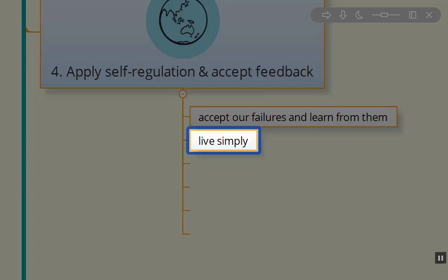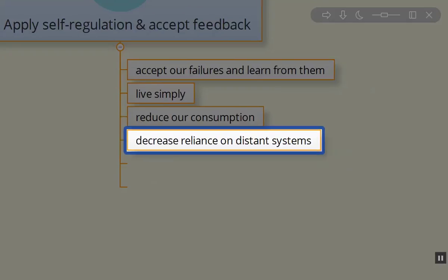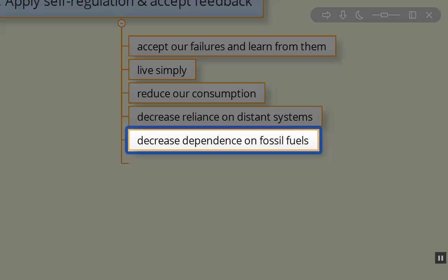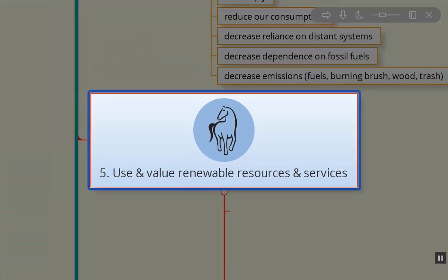Living simply is stopping our reliance on other systems, reducing our consumption, decreasing our reliance on distant systems. We know that food often comes to our grocery stores from the other coast. I'm on the east coast, so food can come from quite a distance. If we can reduce our reliance on these systems, we're winning the game. Decrease our dependence on fossil fuels, decrease our emissions, our fuels, burning brush, burning our trash, burning wood. If we can have more energy efficient homes or utilize thermal mass units, we can decrease our emissions through utilizing these other resources.